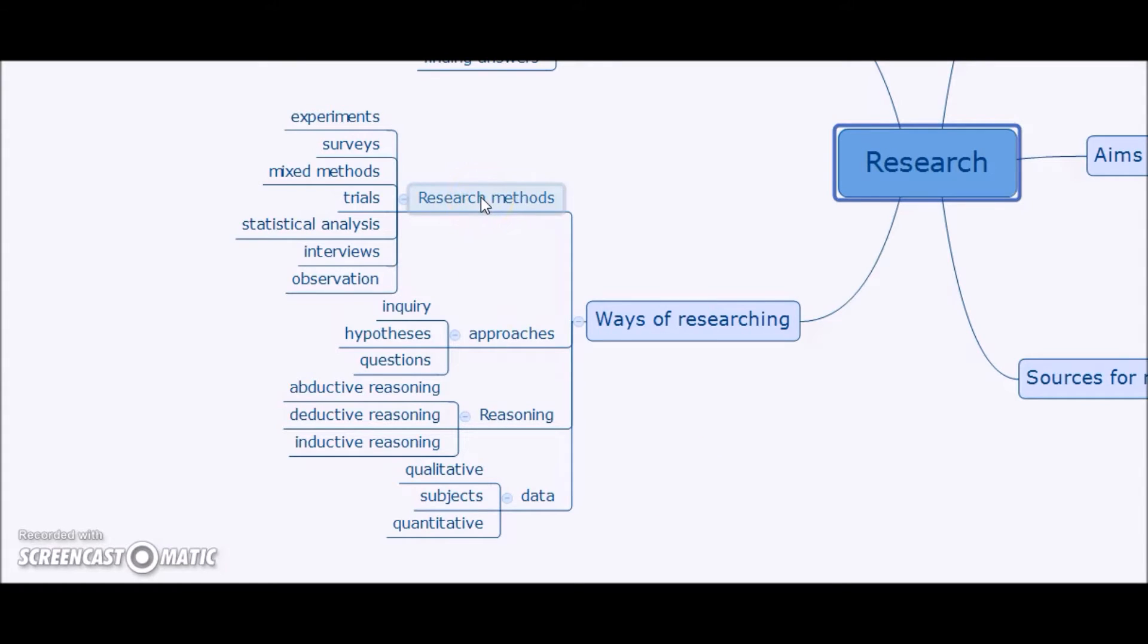So research methods can be quantitative, qualitative, indeed you can see those distinctions made further down in the data. So we might be doing hard numerical statistical analysis, we might be doing empirical experiments, or we might be doing something which is a bit more qualitative, interviews, observations, trials. We might be mixing our methods. So there are lots of different research methods. We have to choose the right one for the type of study we're doing.